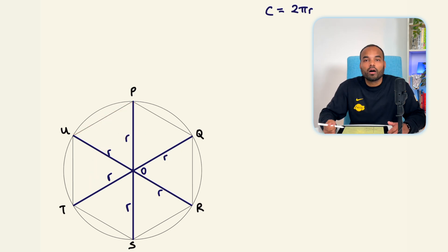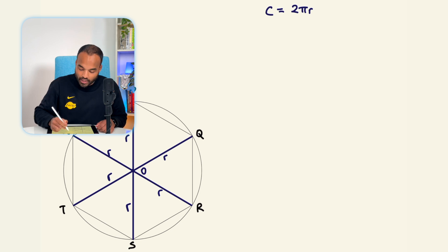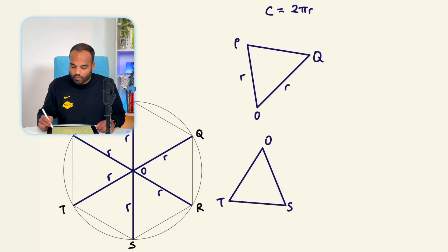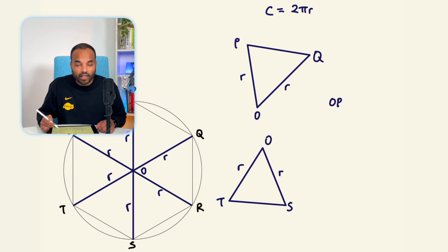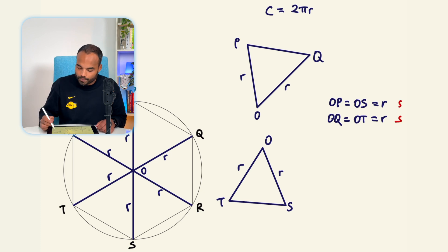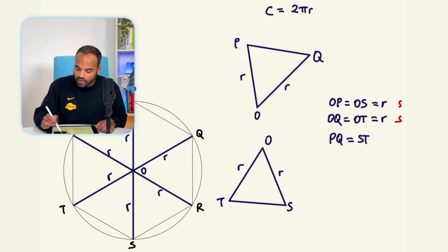We have six equilateral triangles. Let's pick two: triangle OPQ and triangle OTS. I know OP = r, OQ = r, OT = r, and OS = r. These triangles are congruent because OP = OS (both equal r), OQ = OT (both equal r), and PQ must equal ST because they are sides of a regular polygon — in this case, a regular hexagon.